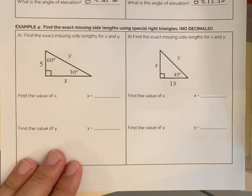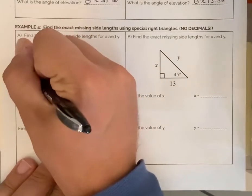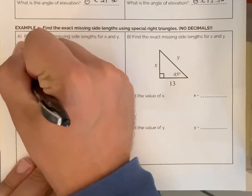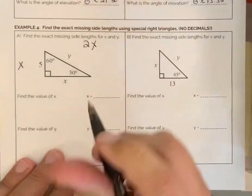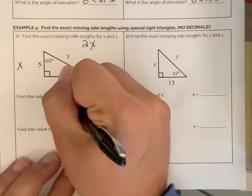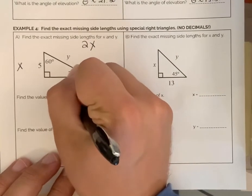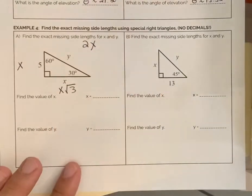What I remember is the shortest side here is called x. The hypotenuse would be 2 times x. And the smallest side is whatever x is times the square root of 3.